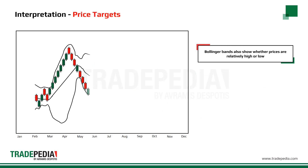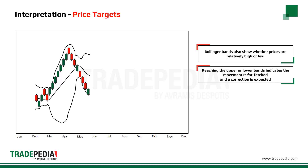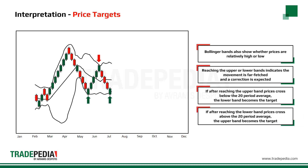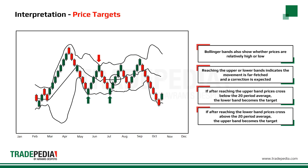Bollinger Bands also show whether prices are relatively high or low. Reaching the upper or lower bands indicates the movement is far-fetched and a correction is expected. If, after reaching the upper band, prices cross below the 20-period average, the lower band becomes the target. If, after reaching the lower band, prices cross above the 20-period average, the upper band becomes the target.